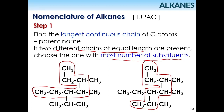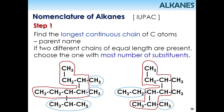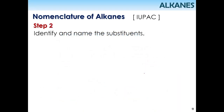A substituent is an atom or group of atoms attached to the parent chain. Anything attached to the parent chain is a substituent. For the first candidate chain there are three substituents, while the second candidate has four substituents. So we are going to choose the chain with four substituents, as it has the most number of substituents.